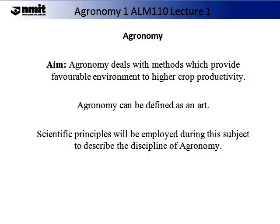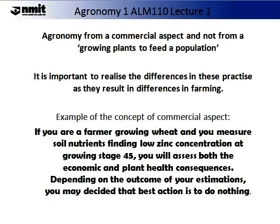Agronomy can be thought of and defined as an art. It is also possible to use scientific principles to make improvements in agronomy. In this subject we will employ scientific principles to describe the discipline of agronomy. As well as underpinning the concepts of science with agronomy, we are also going to examine agronomy from a commercial aspect. For example, if you are a farmer growing wheat and you measure soil nutrients finding low zinc concentration at growing stage 45, you will assess both the economic and the plant health consequences of adding the soil nutrient that it is deficient in and not doing anything at all.